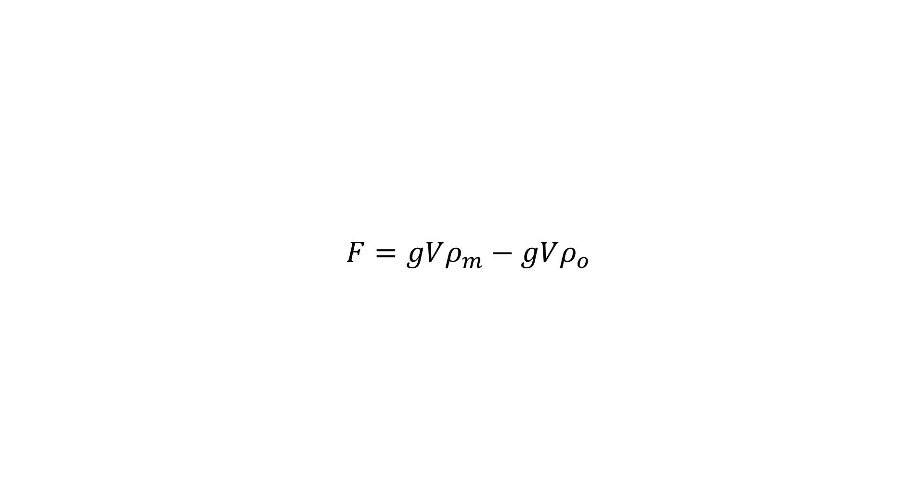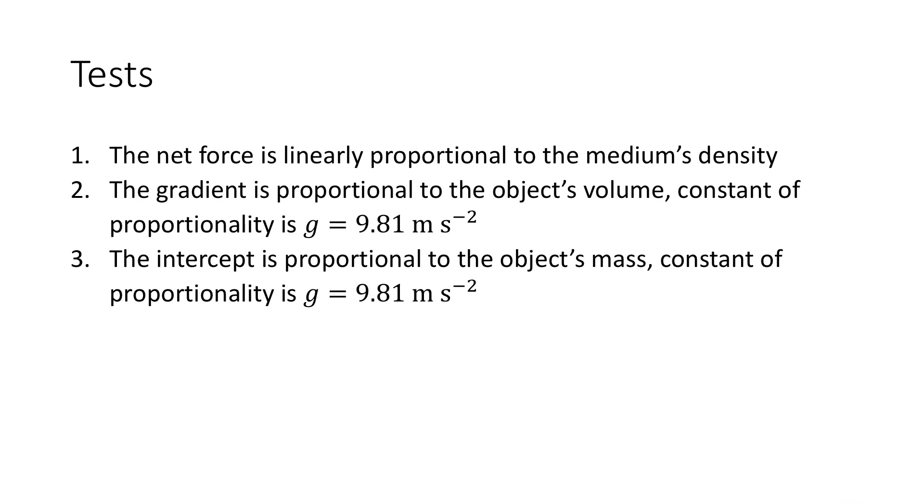So here we can perform three tests to investigate this equation. The first test sees if the net force is linearly proportional to the medium's density as predicted by our equation. The second test investigates whether the slope of that straight line truly is the product of the object's volume and g. The third test investigates whether the intercept of that straight line truly is the product of the object's mass and g.